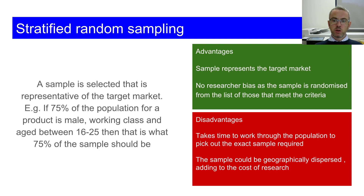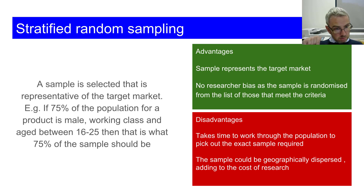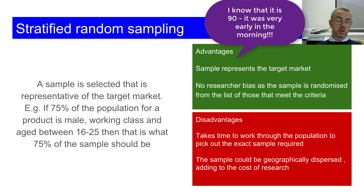The second one is stratified random sampling — it's more wordy but more realistic. A sample is selected that is representative of your target market. So if 75% of the population for a product is male, working class, and aged 16 to 25, then 75% of your sample should be male, 16 to 25, and working class. So if you had a sample of 120, then three quarters — about 80 — must be that 16 to 25 working class group.